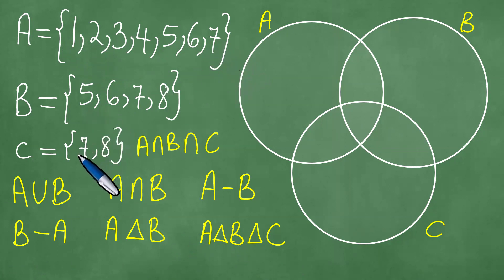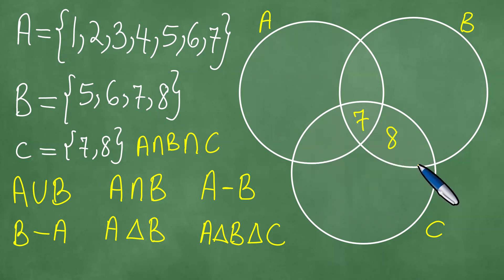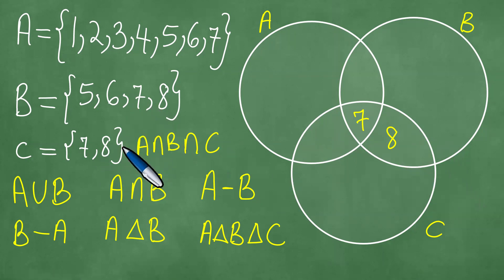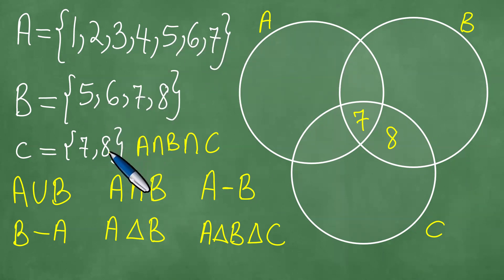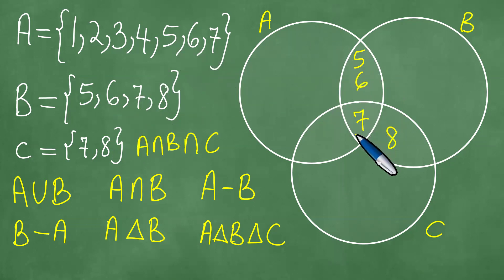We need to first look at the intersections. For example, C consists of the elements 7 and 8, and the elements 7 and 8 are also in B. Moreover, 5, 6, and 7 are in A and also in B, but 7 is also in C. So 7 is in all of them — it's in A, it's in B, and it's in C.